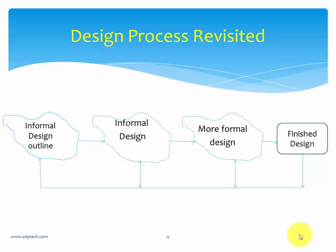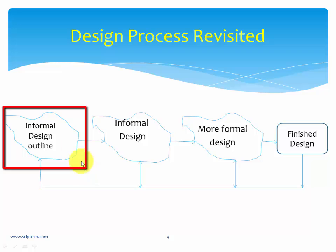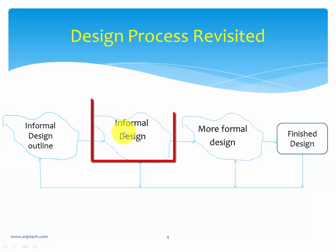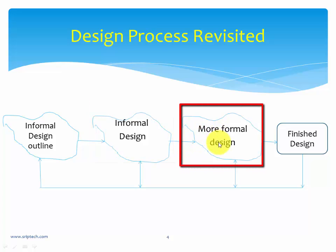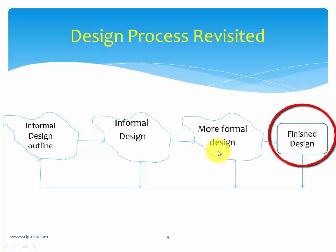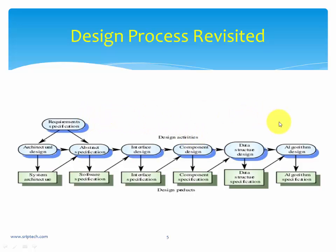Initially when you start a design, you do something called an informal design outline, which gives you the outline or boundary of that particular design. As you add more details you get into an informal design stage, but even there you won't have a perfect design ready to manipulate into software. As the project elaborates, you come into a formal design which can actually be converted into a finished design product, with proper feedback from one stage to another.